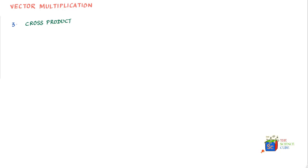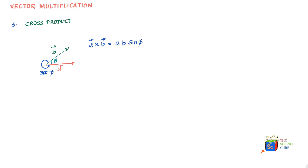The third kind of vector multiplication is called a cross product. If you have a vector a and a vector b, and the angle between the two vectors is phi, then a cross b is written as the magnitude of vector a times the magnitude of vector b times sine of the angle between them. We take the smaller of the two possible angles, because sine of phi is not the same as sine of 360 minus phi.